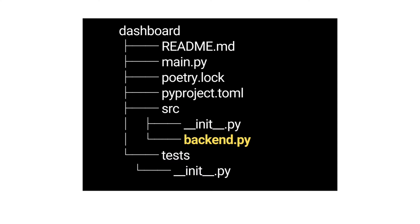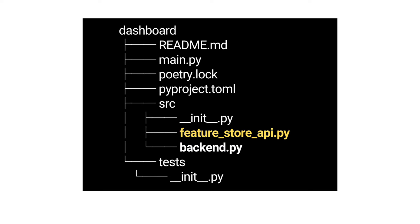In this case we have defined our get_features function that gets the data from the feature store in a separate file called backend.py, which in turn uses another local file we have created — feature_store_api — that handles low-level communication with the feature store. Once you have the UI and the backend services in place, you can spin up your app with 'poetry run streamlit run'. It's great because it works locally, but that's not enough.